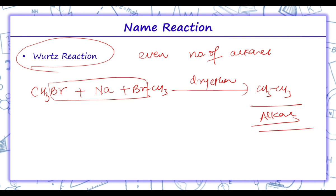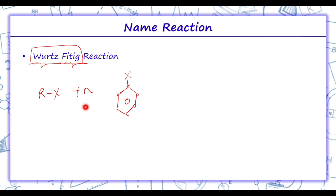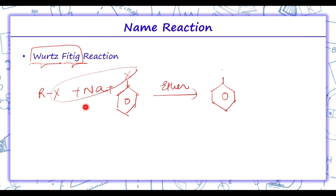The next reaction is Wurtz-Fittig reaction. In Wurtz we take two moles of alkyl halide, but in Wurtz-Fittig we take one mole of alkyl halide and one mole of aryl halide. Conditions are the same — sodium is used and NaX is removed in the presence of ether. The product here is alkyl benzene, for example if CH3 is the alkyl group, we get methylbenzene. Wurtz-Fittig reaction gives alkyl arene products.